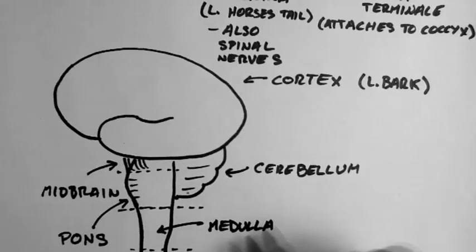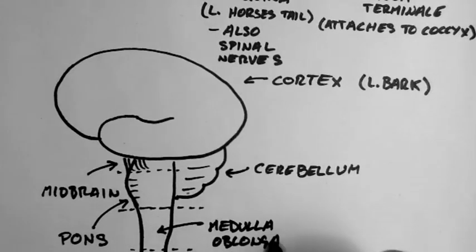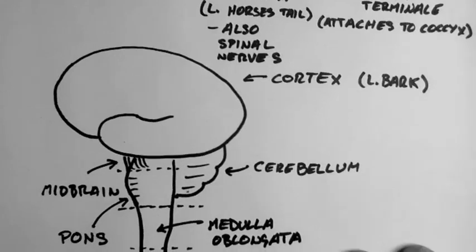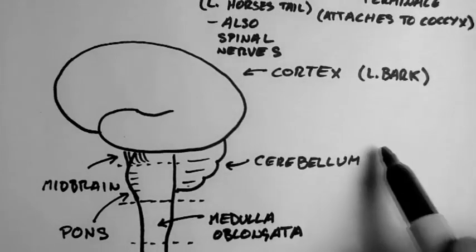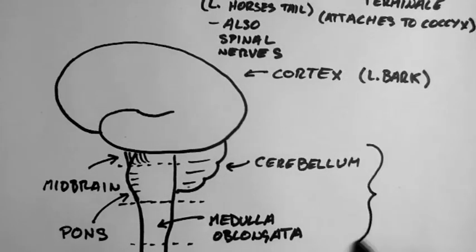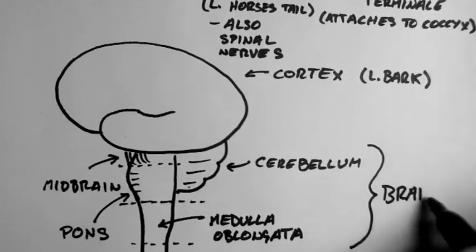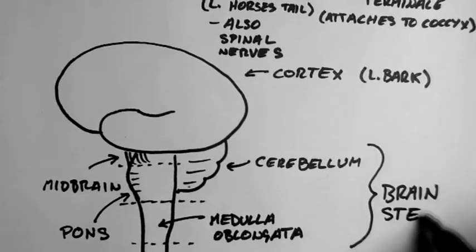And under the pons is the medulla oblongata. All these structures here constitute the brainstem.